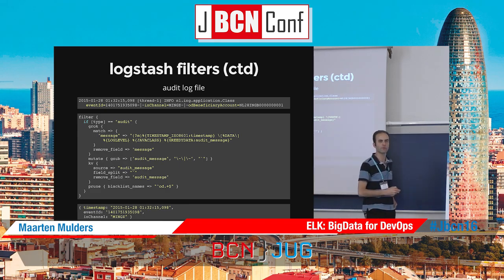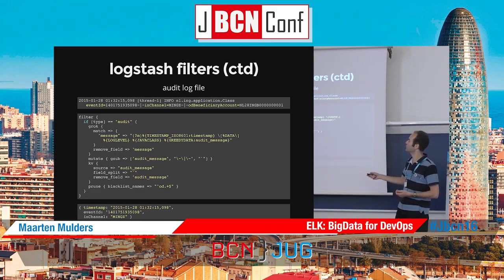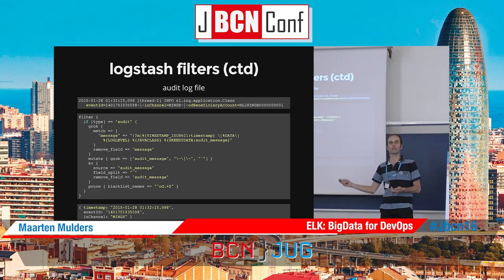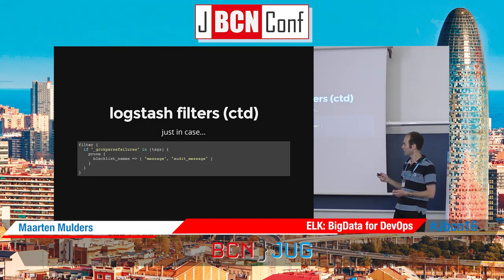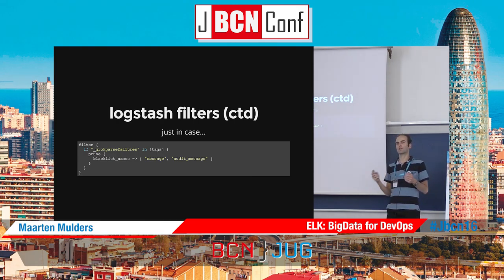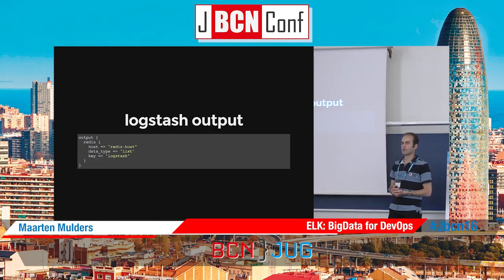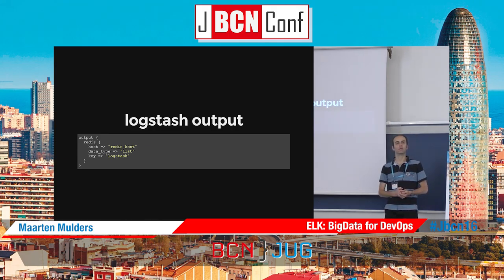But what happens if the grok filter fails because of a syntax error? The whole filtering part is skipped and you move to the output, which means the original message field would still be in the logging event and would still go to Elastic - we can't have that. So the final filter step checks if there is a tag called '_grokparsefailure' in the log event. If so, we make sure to clean up and remove both the message and the audit_message fields. It's better to have a log event with no information than one that says 'John transferred 50 euros to Elisa'. Then we use the Redis output module to ship the log event.